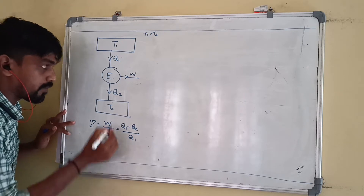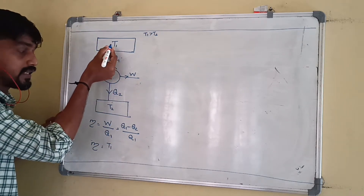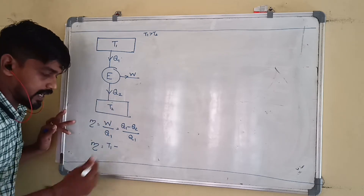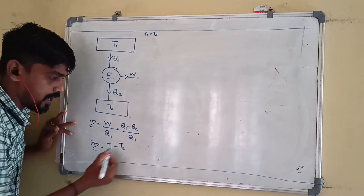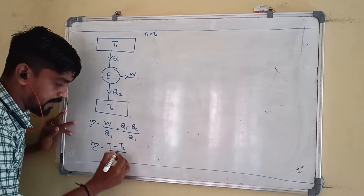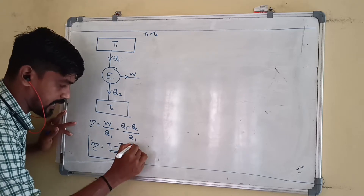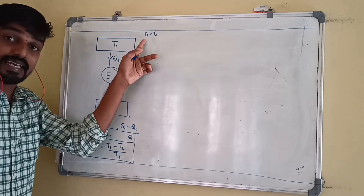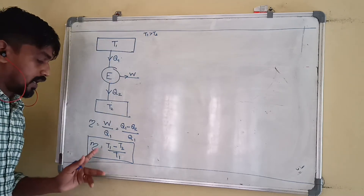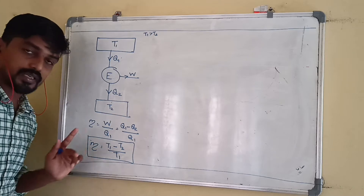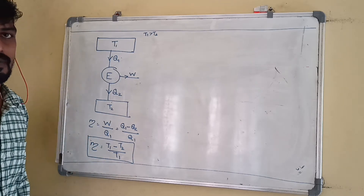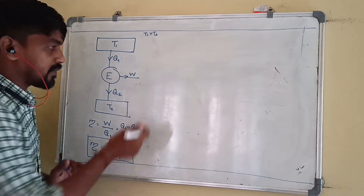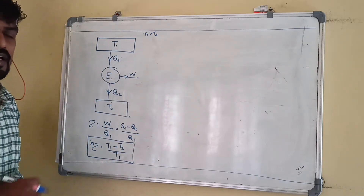Efficiency of heat engine equals Q1 minus Q2 by Q1. Since Q2 is rejected at temperature T2 and Q1 is absorbed at temperature T1, efficiency equals T1 minus T2 divided by T1. Now, what is a refrigerator?